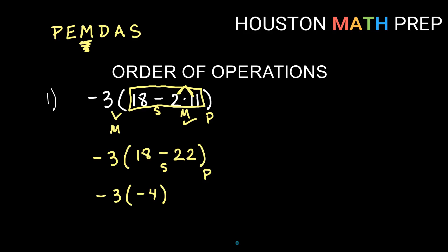Now I still have parentheses, but they're really just showing that the four is negative, so I don't confuse it with negative three minus four — it's negative three times the negative four. Everything inside the parentheses has been done, so the only thing left is the multiply. A negative times a negative gives a positive, and three times four gives us 12.